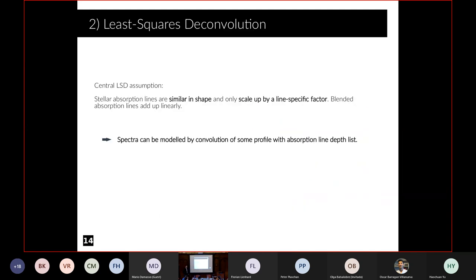This model is based on least-squares deconvolution. That's a relatively old technique used for spectropolarimetric data. There's a famous paper by Donati, and it relies on the assumption that all lines are similar in shape. You have one shape, and you scale it to the depth of the line. It's also based on the assumption that blended absorption lines add up linearly. This is a simplified assumption, but it's fine for rotational broadening. Rotational broadening can be modeled with convolution, so that's absolutely fine.